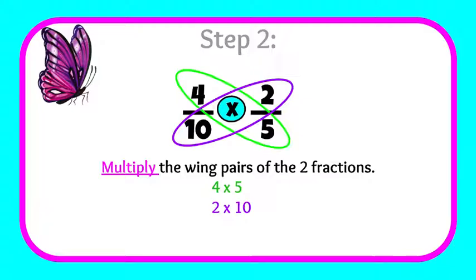Next, we're going to multiply the wing pairs of the two fractions. So we're going to multiply four times five and two times ten. Pretty easy so far.